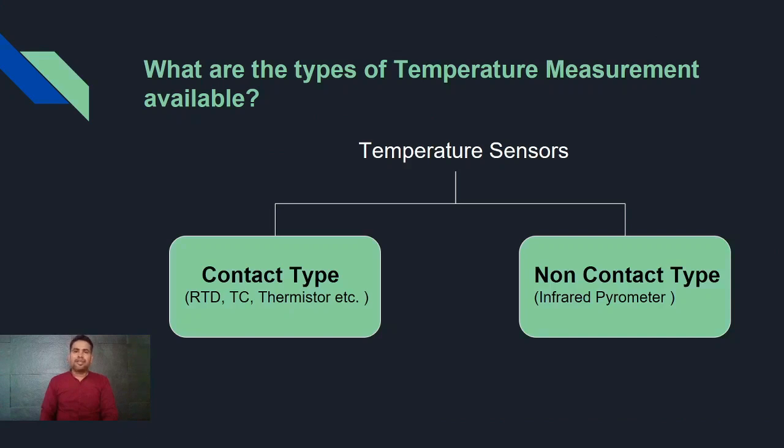Temperature is one of the critical process parameters. That's why we require different types of temperature sensors to measure the process temperature. There are contact type and non-contact type sensors available in the market.